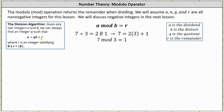As an example, seven divided by three is equal to two with the remainder of one, which we can also express using the division algorithm as seven is equal to two times three plus one. Since the remainder is one when seven is divided by three, we say seven mod three equals one.